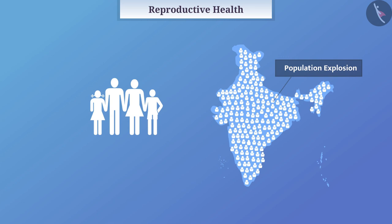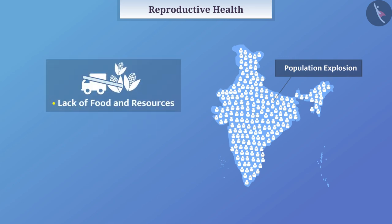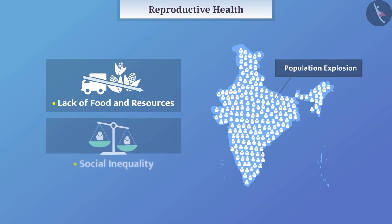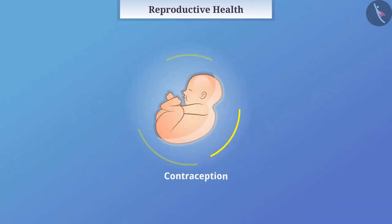This causes problems such as lack of food and resources, and social inequality. Therefore, every person should have the necessary information related to reproductive health. Various solutions of contraception have been discovered to solve these problems.